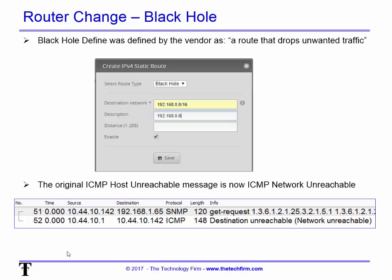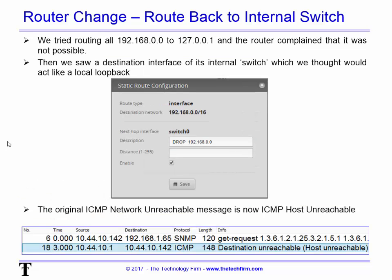So we kind of moved the problem — the reporting problem — from the external side to the internal side. Looking on the positive side, we were at least making progress. Then we tried routing all 192.168.0.0 traffic to the loopback address. Depending on your vendor, you might get away with that — it just dies internally and goes away — but this router rejected it; loopback routing was not possible.